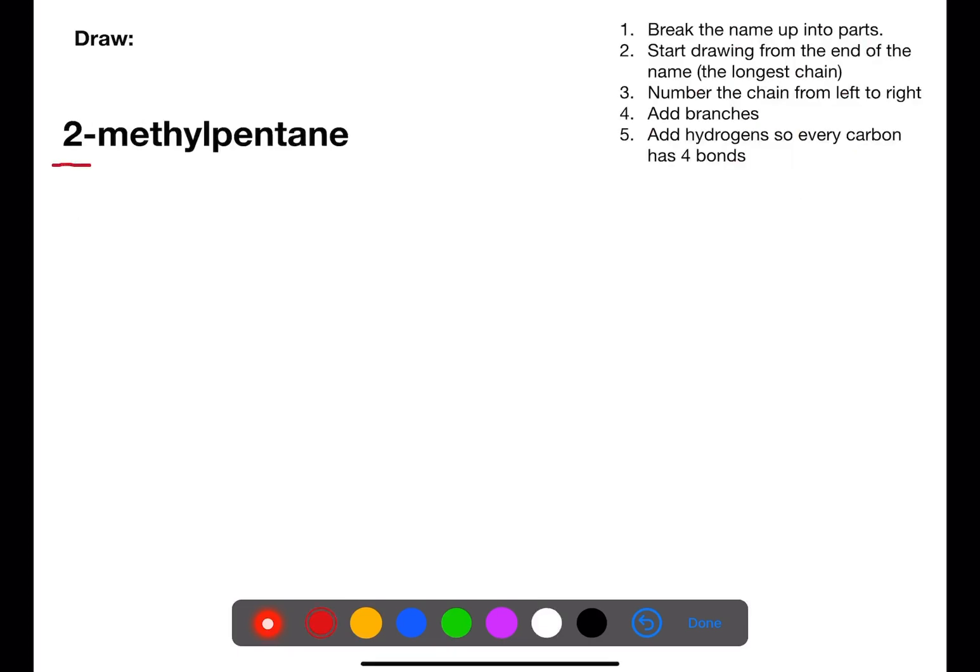In this first example we have two for the number, methyl for the branch, and pentane for the chain. Pentane has five carbons. We then number it from left to right and on number two we have a methyl group.